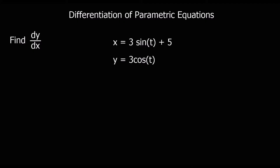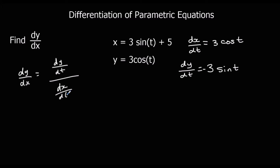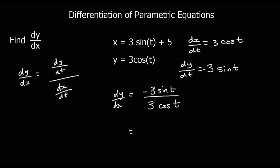Here's another example. We're going to find dy/dx, so we differentiate both separately. dx/dt: if we differentiate sine, it goes to cos, so this would be 3cos t. And dy/dt: if we differentiate cos, we go to minus sine, so we get minus 3sin t. So dy/dx is dy/dt over dx/dt, which equals minus 3sin t over 3cos t. We can simplify that — cancel the 3s — and sine over cos is tan, so we've got minus tan t.